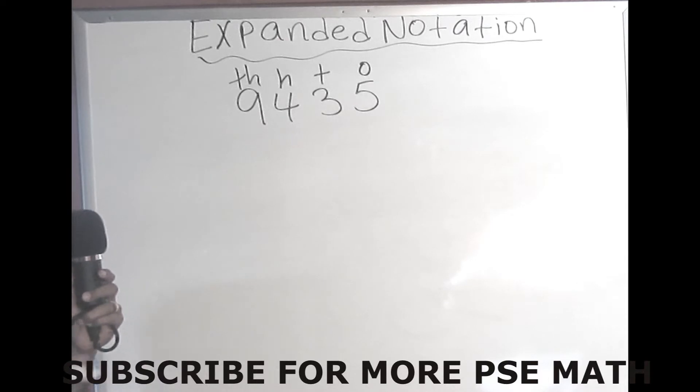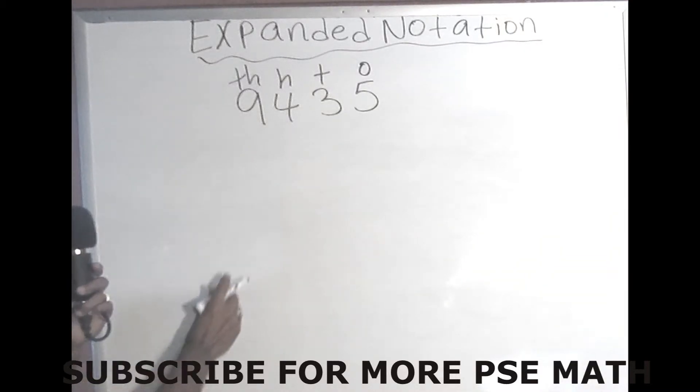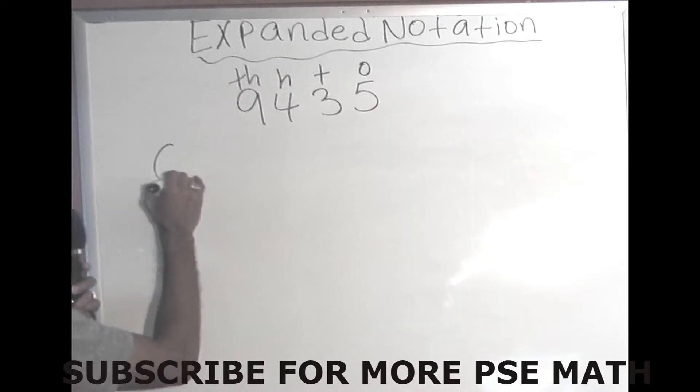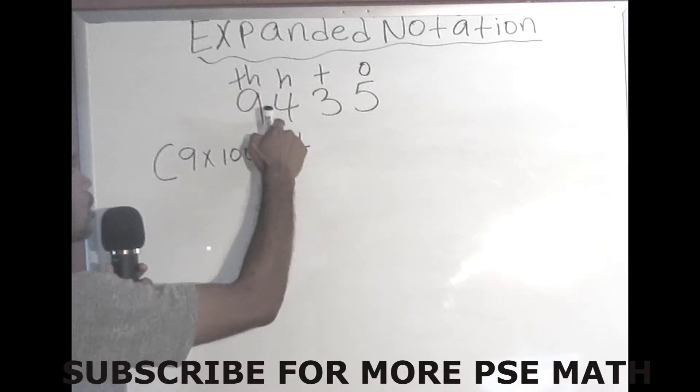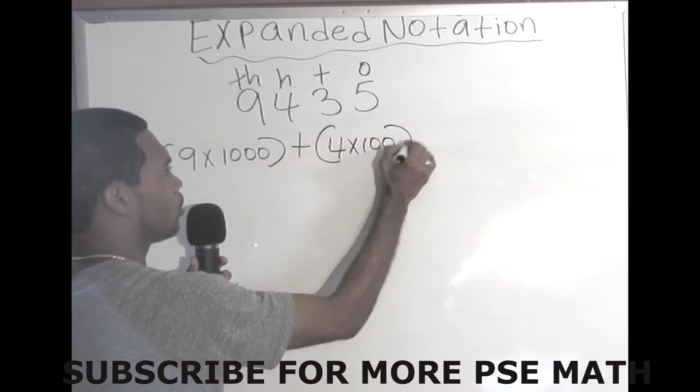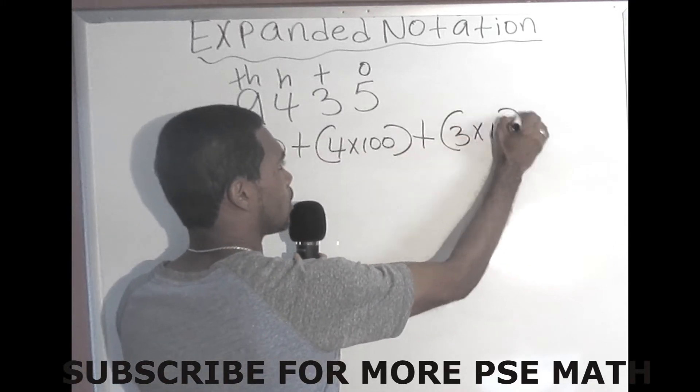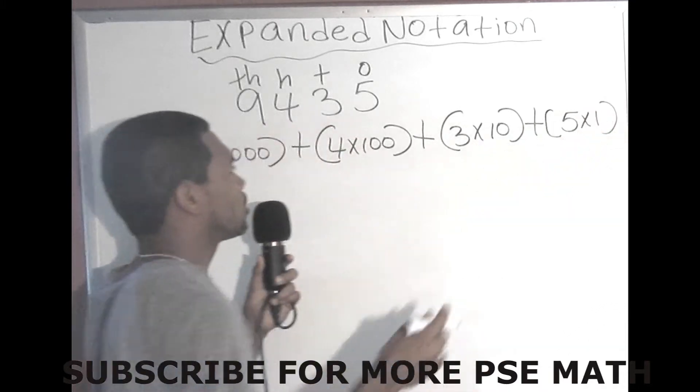And now we want to expand the number starting from the 1000s place. Alright, so here we have 9,435. And we want to expand this. There are two ways to do it. Let's do it the first way. So the 9 is in the 1000s place. So it's in bracket 9 times 1000, close bracket, plus. The 4 is in 100s place. So it will be 4 times 100, close bracket, plus. The 3 is in the 10s place.